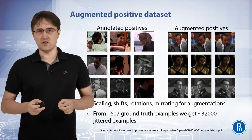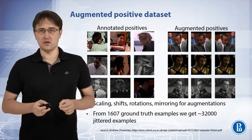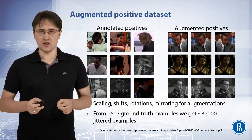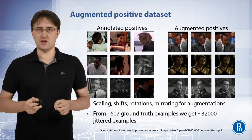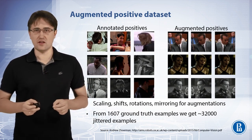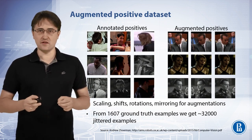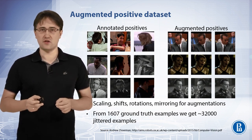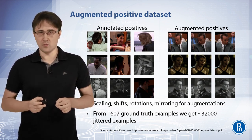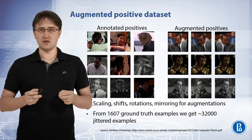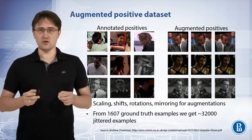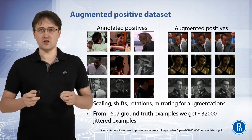First, positive data is augmented. Methods of data augmentation for object detector training are the same as for image classification training. We apply random perturbations like scaling, shifts, rotation, and mirroring to positive examples. In this particular example, from 1600 ground-truth examples we get 32 thousand jittered examples.